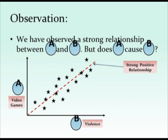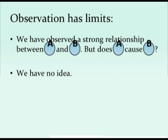In this hypothetical scenario, we see a strong positive relationship between our A and B variables, meaning the more people play violent video games, the more violent behavior they actually exhibit. So we've observed this strong relationship between A and B — but can we now say that A causes B? Do we have any idea about this causal relationship? And the answer is no. We still have no idea, despite having found that A and B are very much correlated.